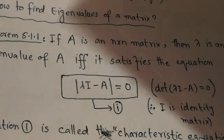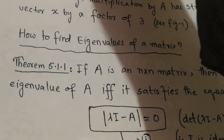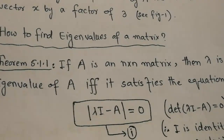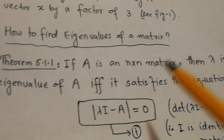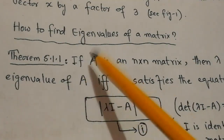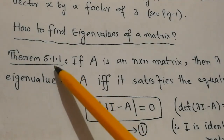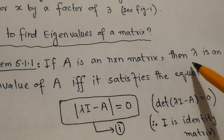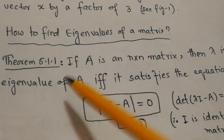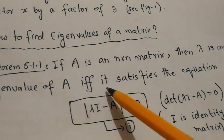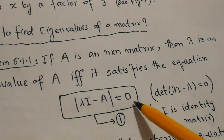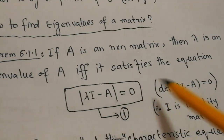The next question is: how do we find an eigenvalue of a given matrix? For this we have Theorem 5.1.1: If A is an n×n matrix, then lambda is an eigenvalue of A if and only if it satisfies the equation det(lambda I minus A) = 0.